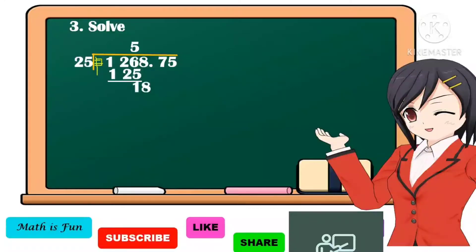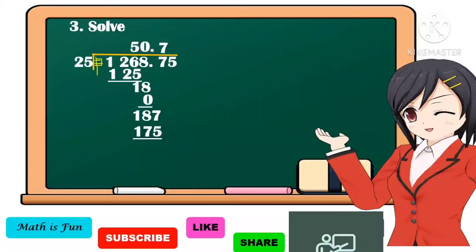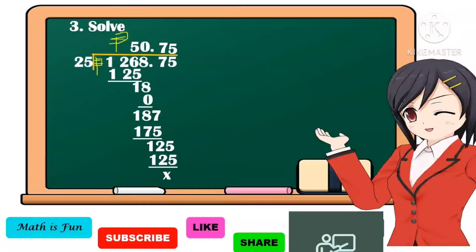18 divided by 25 is equal to 0. Then we're going to copy the decimal point to our quotient. 0 times 25 is equal to 0. 18 minus 0 is equal to 18. Bring down 7. 187 divided by 25 is equal to 7. 7 times 25 is equal to 175. 187 minus 175 is equal to 12. Bring down 5. 125 divided by 25 is equal to 5. 5 times 25 is equal to 125. 125 minus 125 is equal to 0 — no remainder. Therefore, 1 kilo of rice costs 50 pesos and 75 centavos.